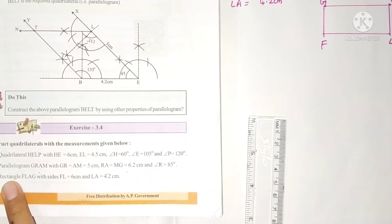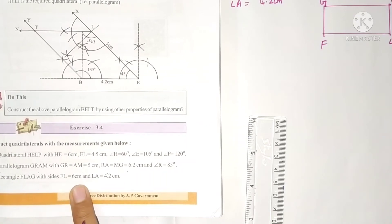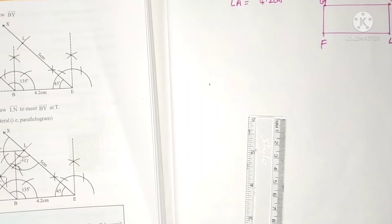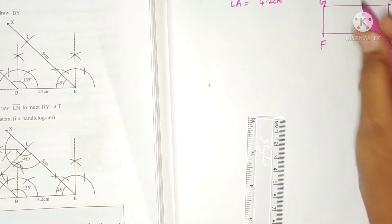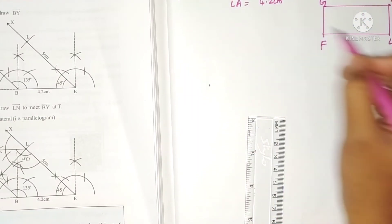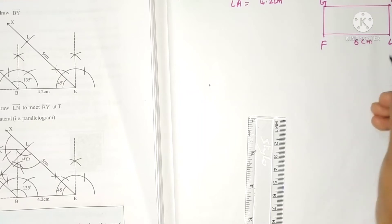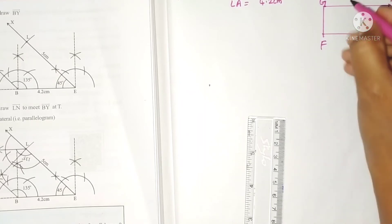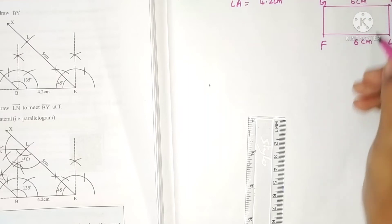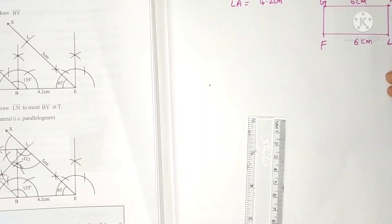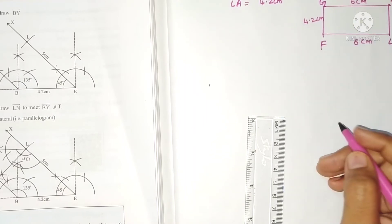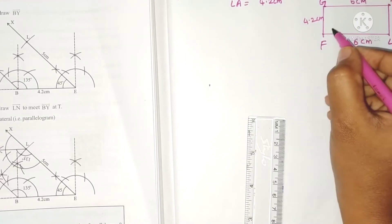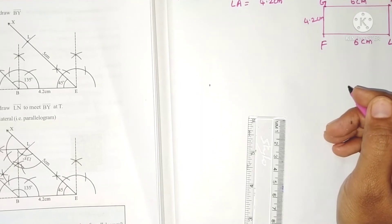Third problem: Construct rectangle FLAG with sides FL and LA. Write the given measurements and draw the rough diagram. FL = 6 centimeters; opposite sides are equal in a rectangle, so AG = 6 centimeters. LA = 4.2 centimeters, and FG = 4.2 centimeters. All angles in a rectangle are 90 degrees.